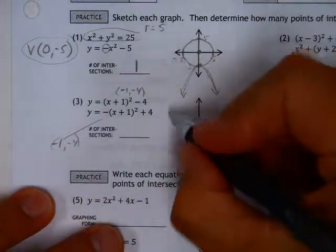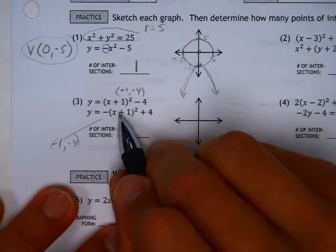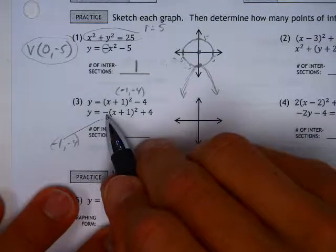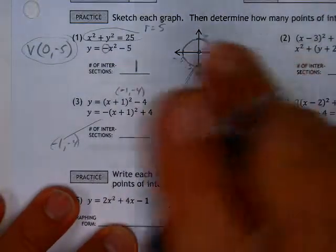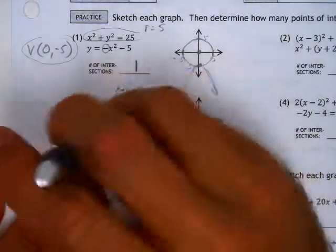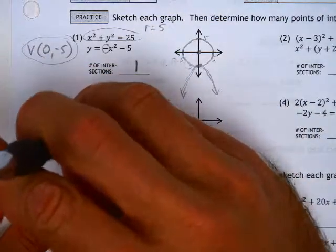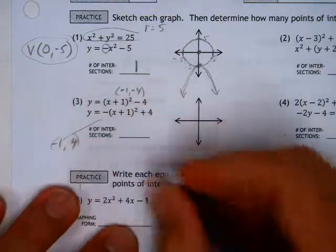Okay, so that negative doesn't change that part of the vertex, it just flips it upside down. So, oh, it is a positive 4, just making sure we're all awake here. Okay, so that's a positive 4.